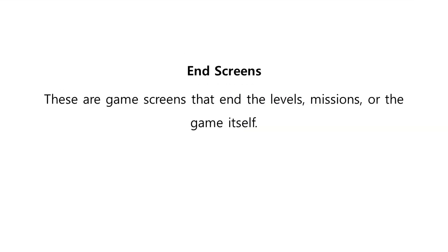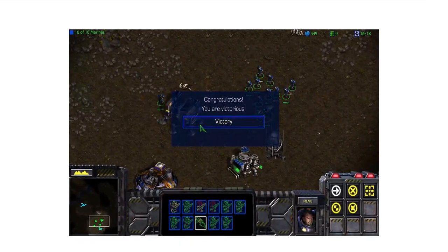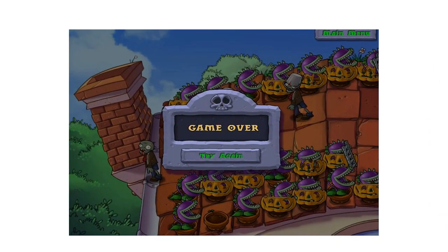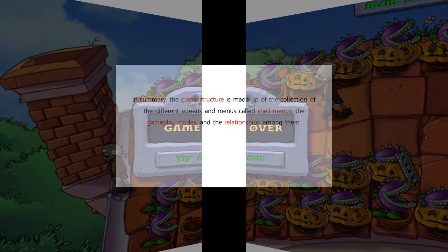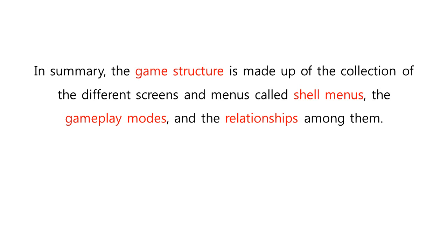Video games also include ending screens. These are game screens that end the levels, missions, or the game itself. For example, this end screen indicates an end with a mission from the first video game of the Starcraft series. This end screen indicates a failed level in Plants vs Zombies. In summary, the game structure is made up of the collection of the different screens and menus called shell menus, the gameplay modes, and the relationships among them.